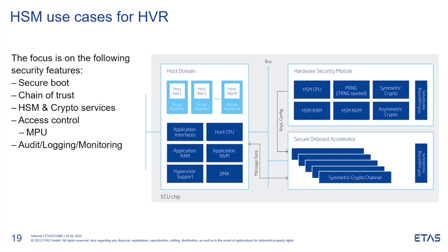Secondly, we have the chain of trust operations. Generally, HSM performs a trusted chain of operations using certificates. Certificates are used as an enabler for several secure access use cases, such as changing ECU lifecycle in HSM, unlocking the debug port, and most importantly, to perform a software update. In a virtual environment, this is critical in terms of the software update use case, where we might have to update the software on independent and individual VMs without affecting the other virtual machines in the system.